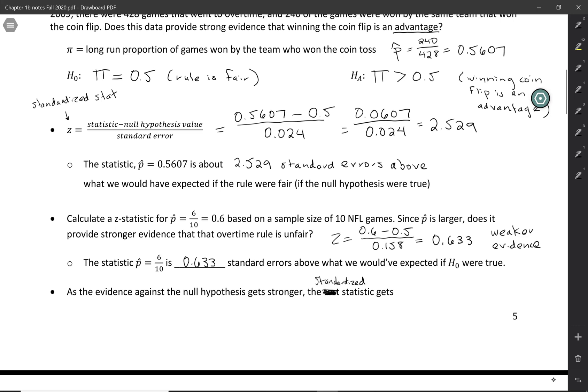This is how it works in general: as the evidence against the null hypothesis gets stronger, the standardized statistic gets further from zero. Basically, this is a way of measuring how far your sample proportion is away from what you expected it to be, either above or below, in terms of the standard error.